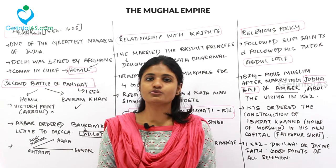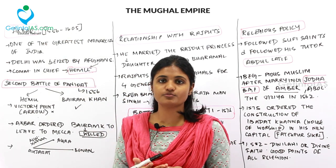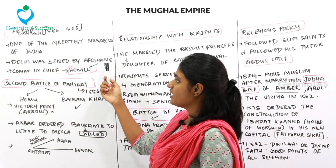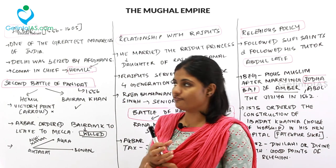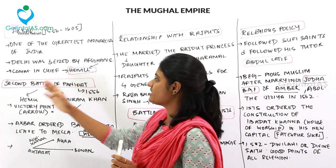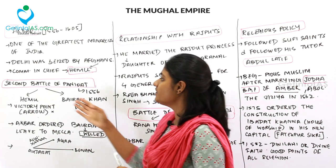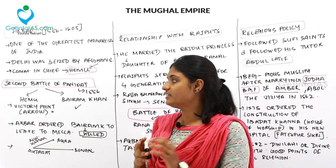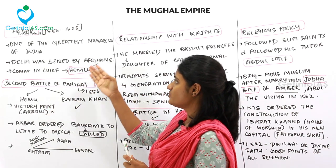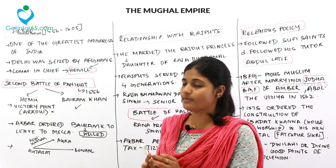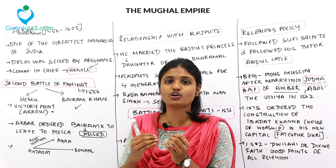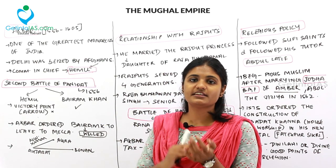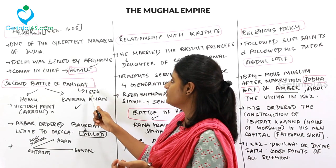Akbar ruled from 1556 to 1605. After Humayun's death, Akbar was too young to rule alone. Delhi was seized by the Afghans, whose commander-in-chief was Himu. The Second Battle of Panipat was fought between Himu and Bairam Khan, Akbar's guardian and commander. Though Himu was near victory, an arrow struck his eye and he went unconscious; his army fled, and the Mughals won. The Second Battle of Panipat was fought in 1556.